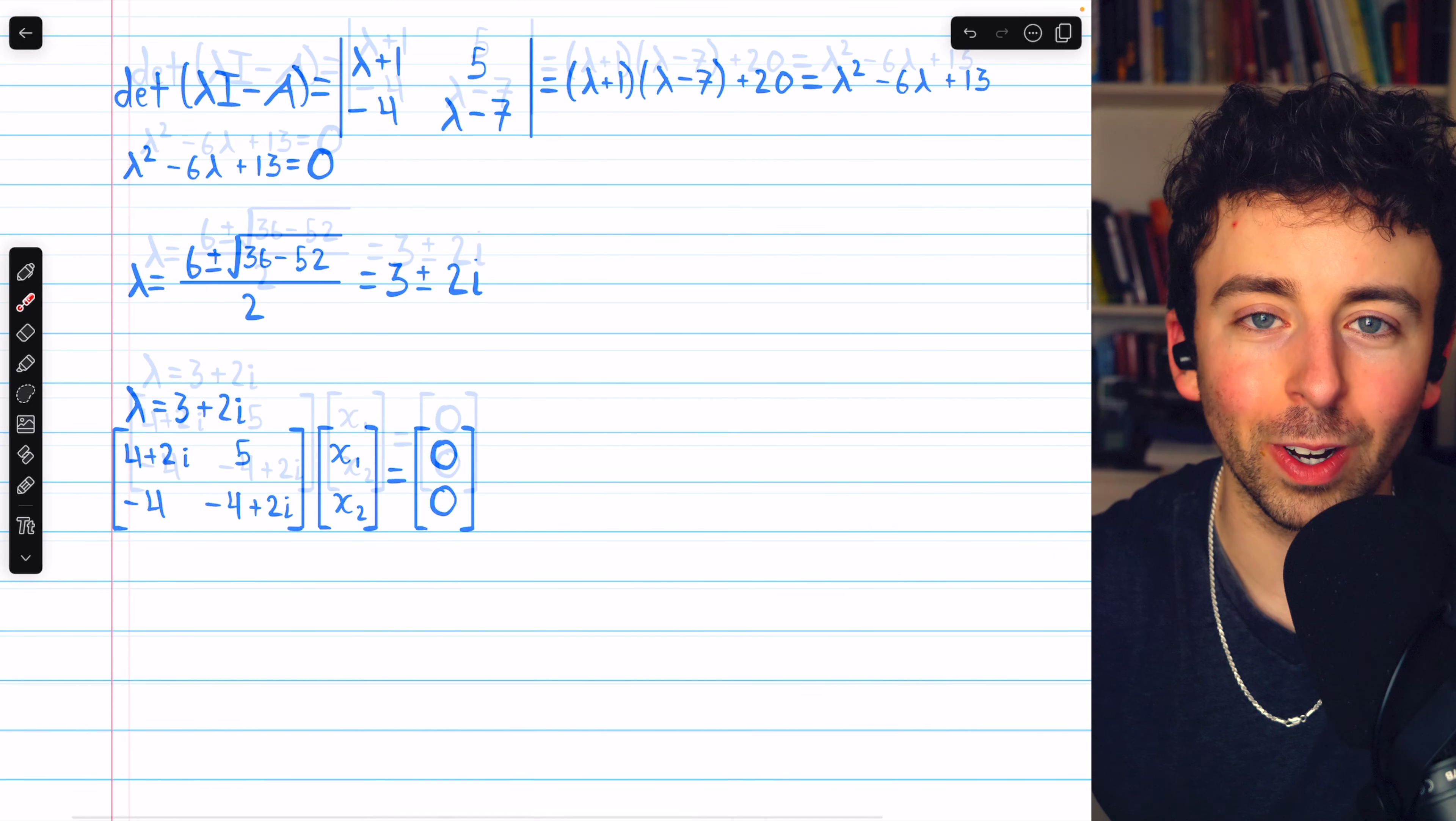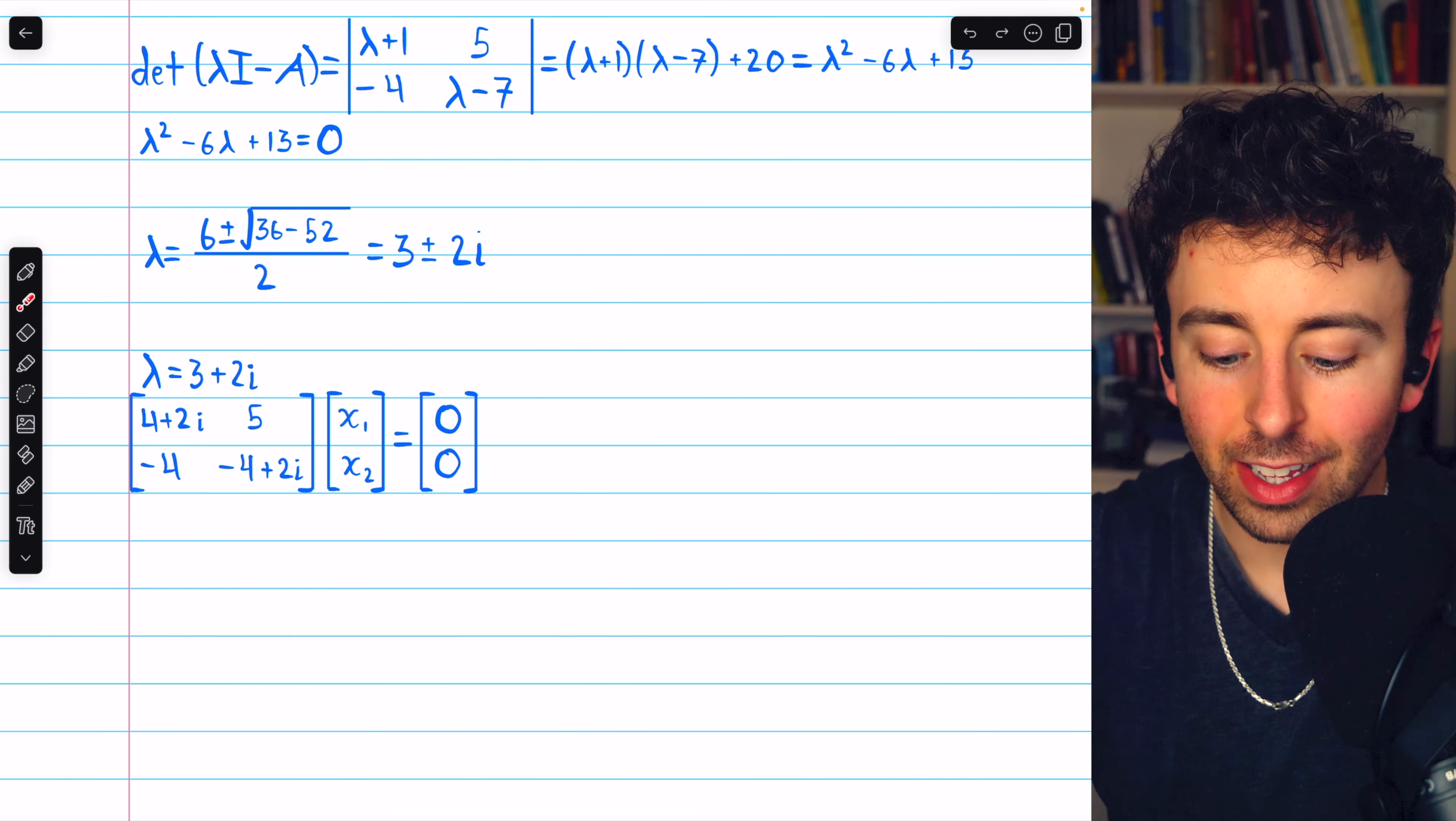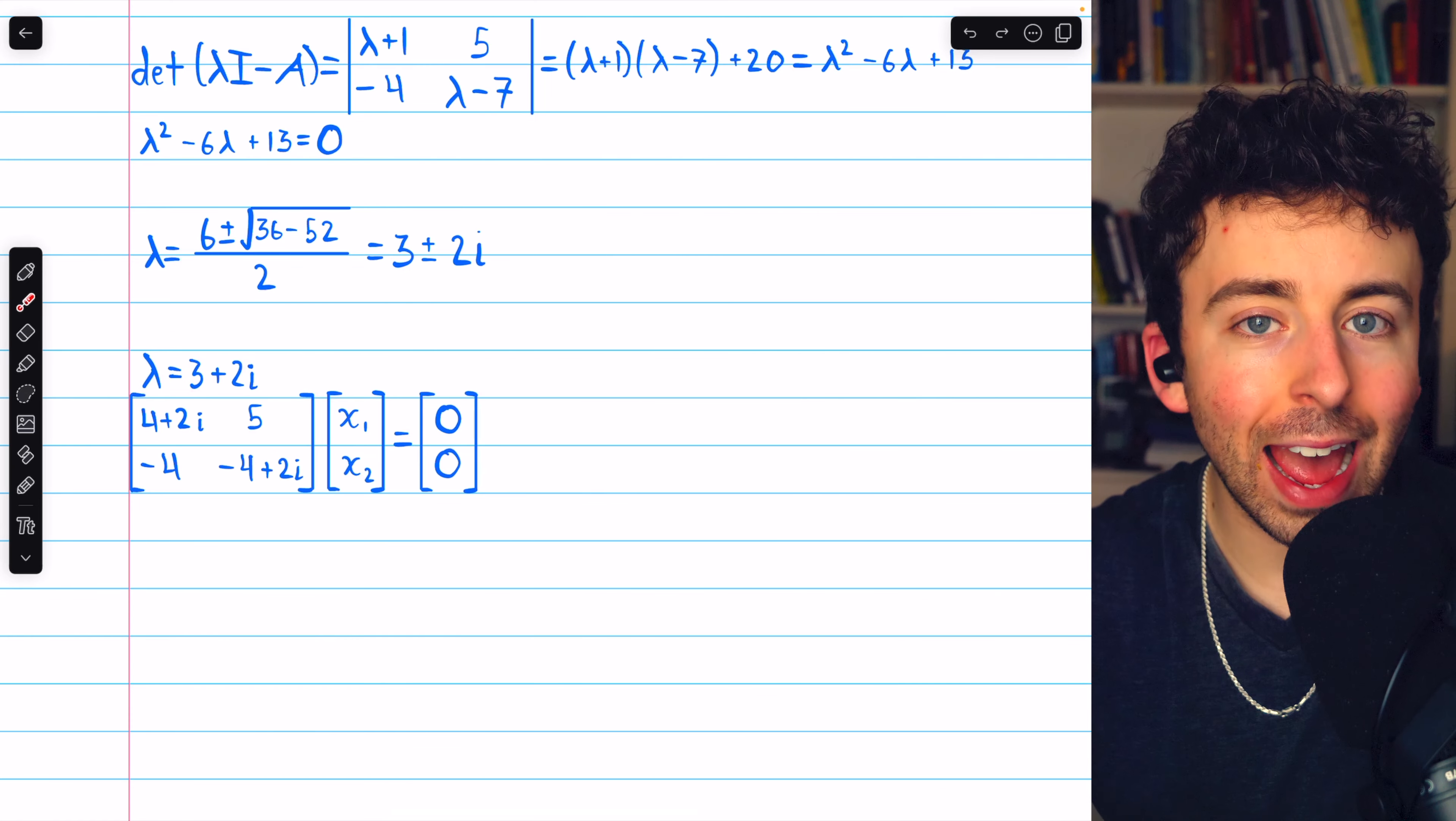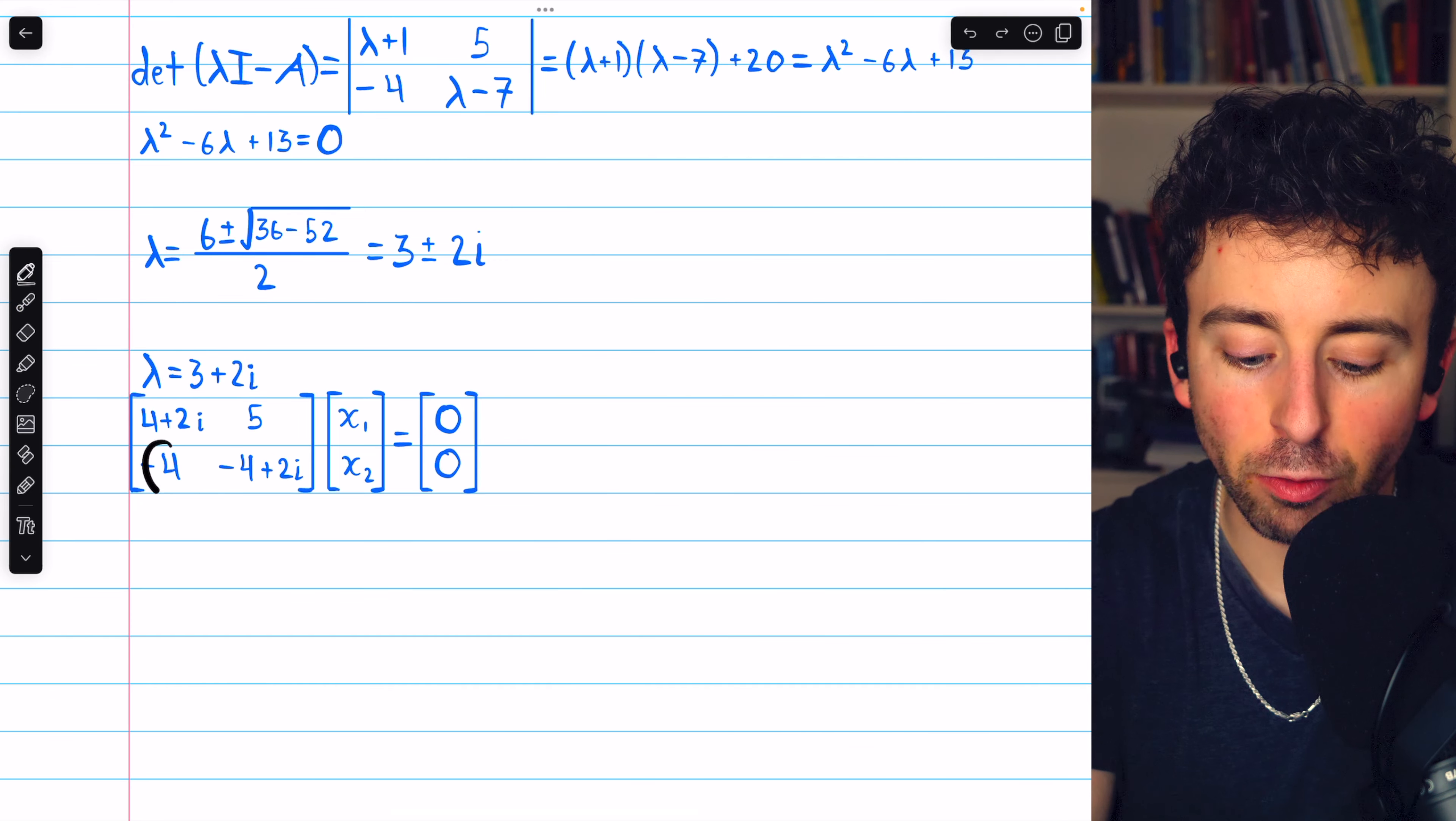Instead, we can use a much nicer shortcut. We have to remember that we already know this is an eigenvalue of the matrix. Hence, this system has to have non-trivial solutions, because there have to be eigenvectors corresponding to this eigenvalue. Since there have to be non-trivial solutions, if we performed Gauss-Jordan elimination, we would certainly get a row of zeros.